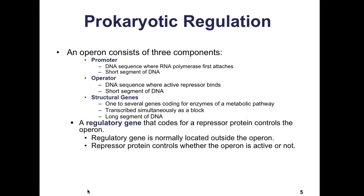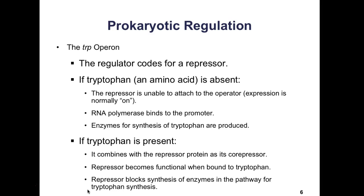The structural genes code for the codons needed to make a protein. A regulatory gene codes for a repressor protein that controls the operon itself; it is normally located outside the operon. The repressor protein controls whether the operon is active or not — basically turning the gene on and off.